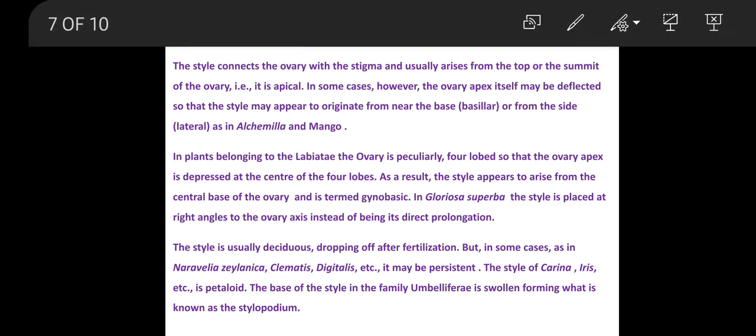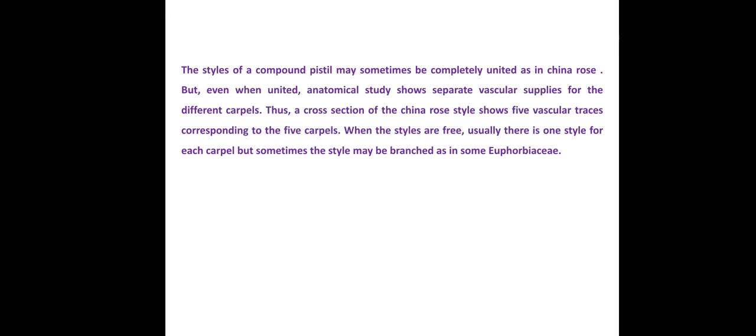The style of a compound pistil may sometimes be completely united, as in China rose, but even when united, anatomical study shows separate vascular supplies for the different carpels. A cross section of the China rose style shows five vascular bundles corresponding to five carpels. When styles are free, there is usually one style per carpel, but sometimes styles may be branched, as in some members of Euphorbiaceae.